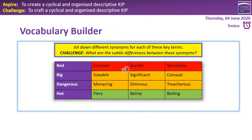Okay Year 7. So here we've got some synonyms for the words in the purple column. For red, for example, we've got crimson, scarlet, vermilion. For big, I've got sizeable, significant, and colossal. For dangerous, I've got menacing, ominous, and treacherous. And for hot, I've got fiery, balmy, and boiling. So you can add those to your lists — those subtle differences really do make a change in your vocabulary, and thinking about your creative writing and the words that you may use in your creative writing as well.